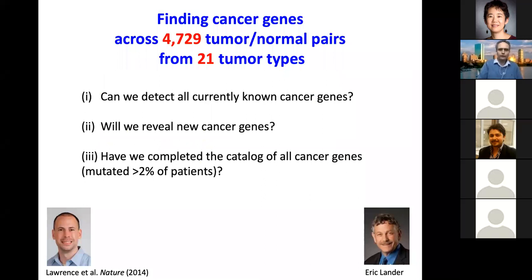Now, with this new tool for finding cancer genes, together with Mike Lawrence and Eric Lander, we looked at nearly 5,000 tumor-normal pairs from 21 tumor types and asked: can we detect all currently known cancer genes, can we find new ones, and have we completed the catalog of cancer genes?